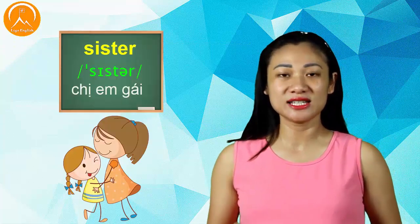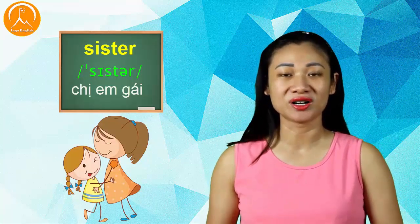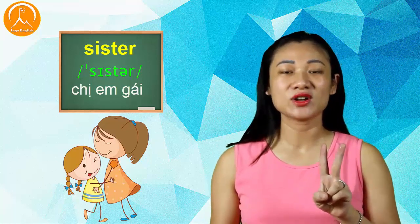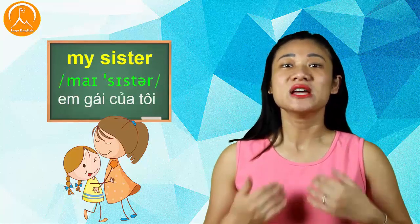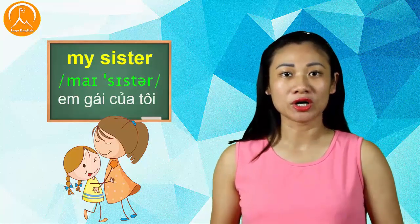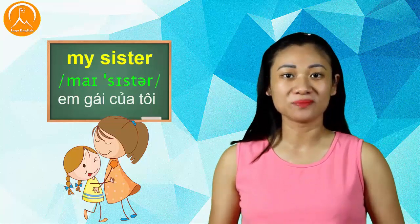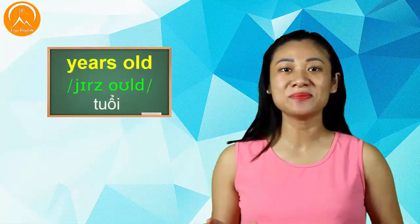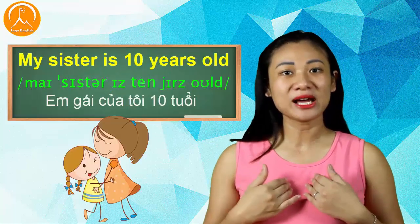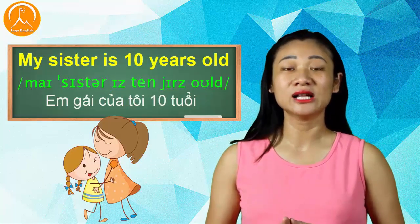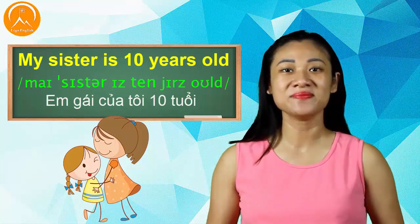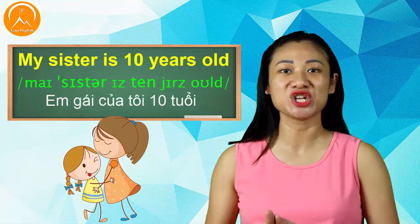Và nếu là chị em gái thì mình sẽ dùng từ "sister" — có 2 âm S, các bạn chú ý: "sis" sau đó bật "ter" ở phía đằng sau. Em gái của tôi là "My sister". Ví dụ em gái của mình 10 tuổi — 10 là ten — mình lại ghép thêm "years old" ở đằng sau. "My sister is 10 years old".